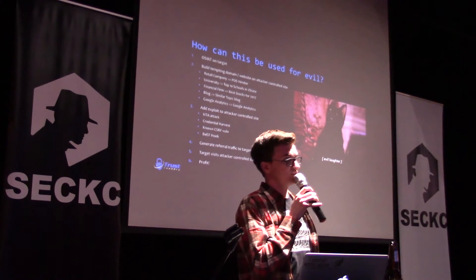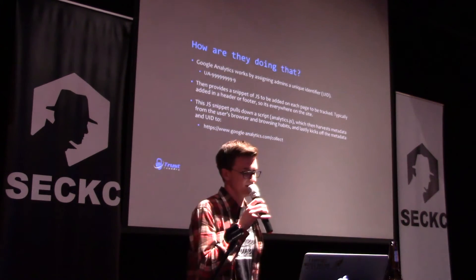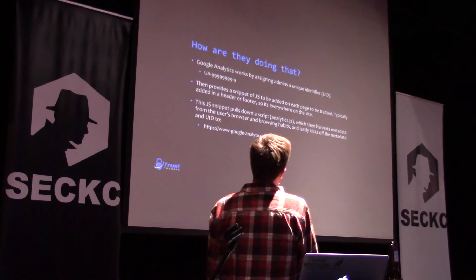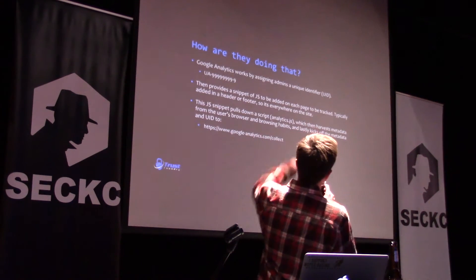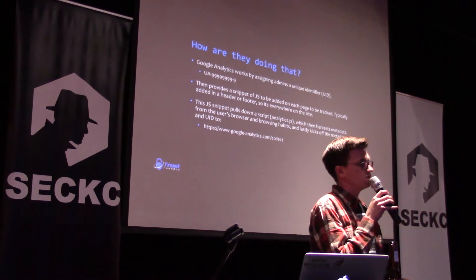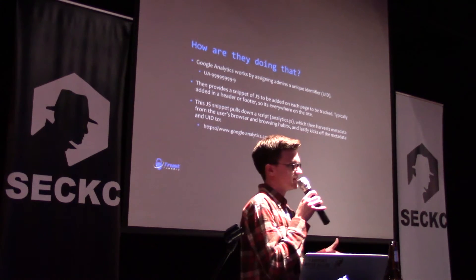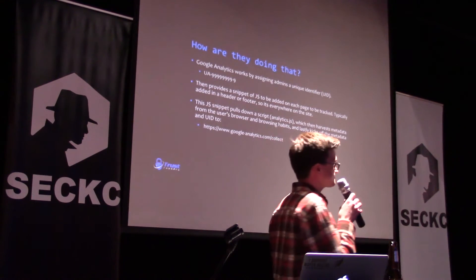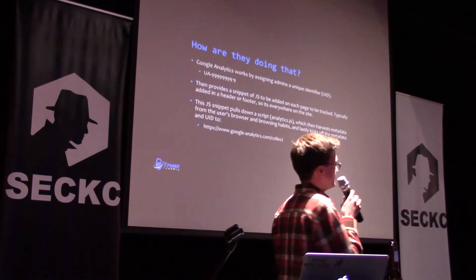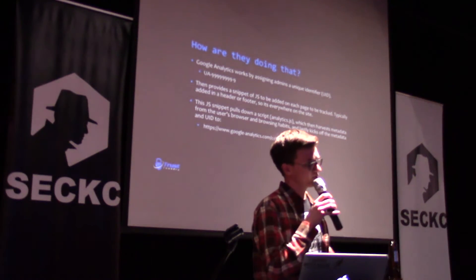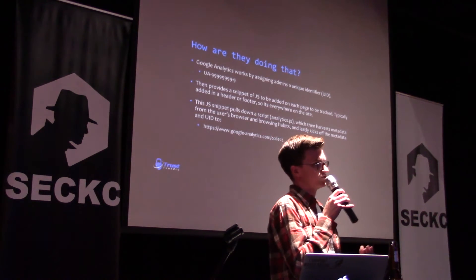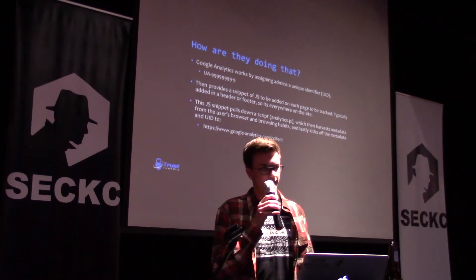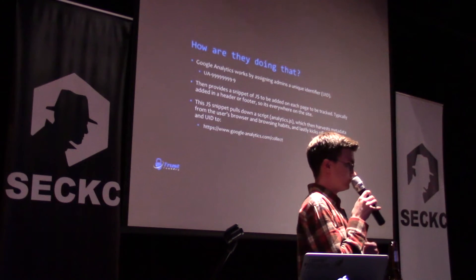It seemed pretty viable — someone could probably do some bad things with this. So the next question I asked myself is: how are they doing it? That basically begs the question of how does Google Analytics work? When you set up Google Analytics, you get a unique identifier — basically how Google knows what site it's tracking. They give you a little snippet of JavaScript to put on every single page you want tracked, typically in the header or footer. When a user comes to your site, that JavaScript executes, pulls down an even bigger script, and that script grabs all sorts of metadata about the user: how long they've been there, where they're going, how they got there, and so on. Google collects all this data to paint a picture of what a user did while they were there.